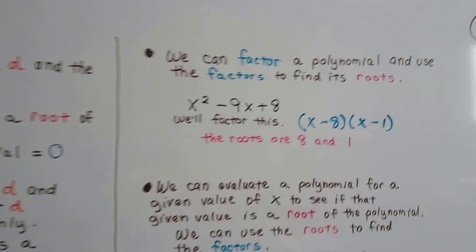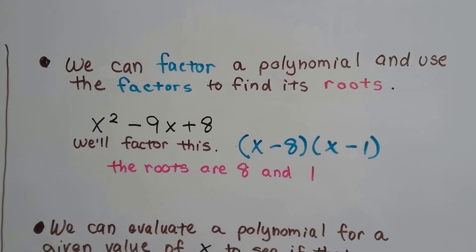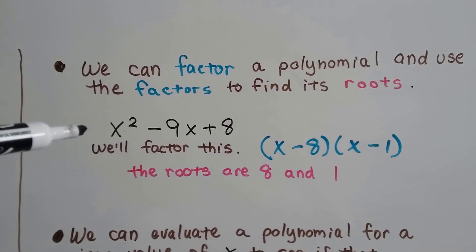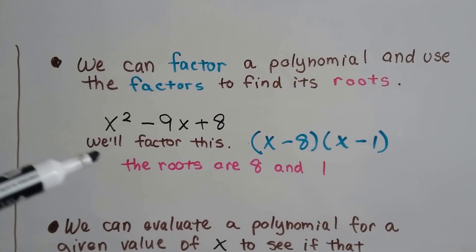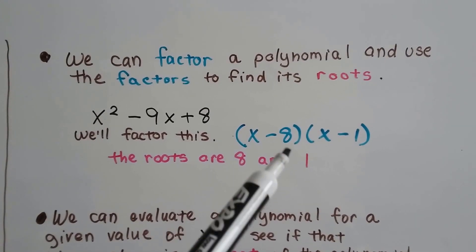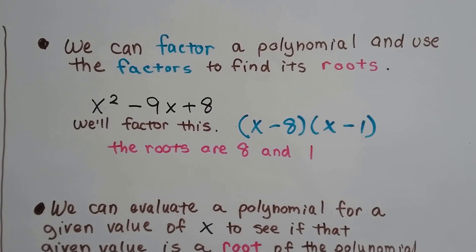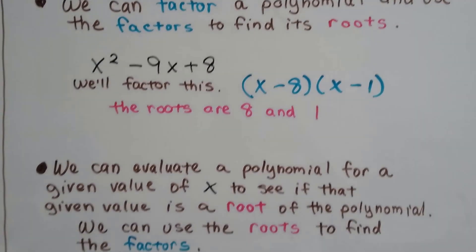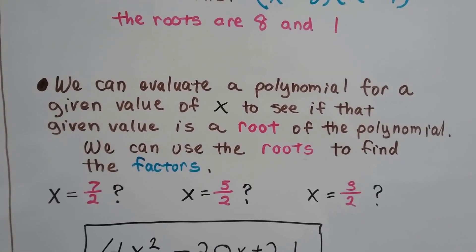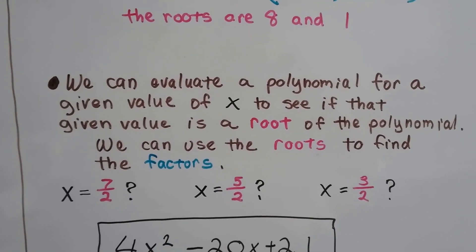So we can factor a polynomial and use the factors to find its roots. If we have a polynomial like x squared minus 9x plus 8, and we factor this, it factors out as x minus 8 times x minus 1, we know the roots are 8 and 1. We factored it and found its roots. We can evaluate a polynomial for a given value of x to see if that given value is a root of the polynomial.